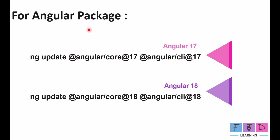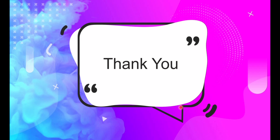The third step is to update the Angular packages. For Angular 17, run `ng update @angular/core@17 @angular/cli@17`. For Angular 18, run the same command replacing 17 with 18. This command updates all Angular packages in your project to the specified version. You can also run `ng update` alone to check migration status — if any dependencies are pending, it will provide the commands to upgrade them.